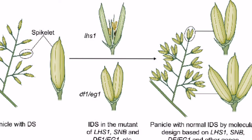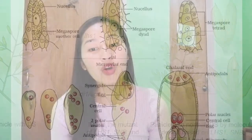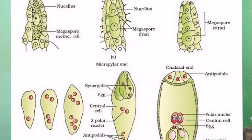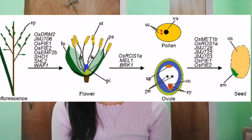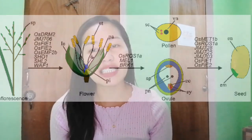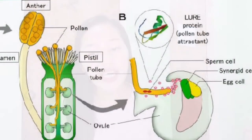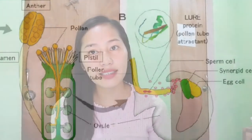The vegetative phase is followed by the reproductive phase, which initiates with the formation of spikelets, followed by megasporogenesis and megagametogenesis, microsporogenesis and microgametogenesis, fertilization, and grain development cascades.